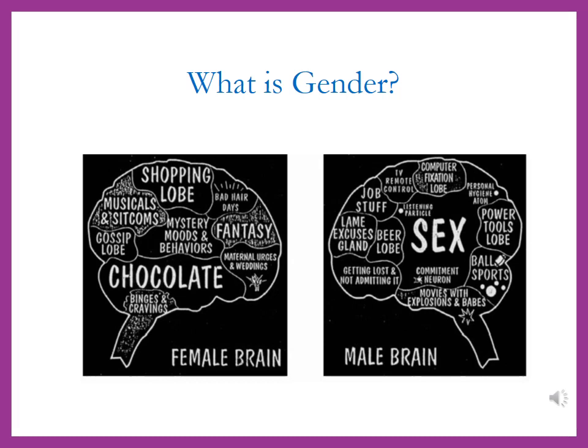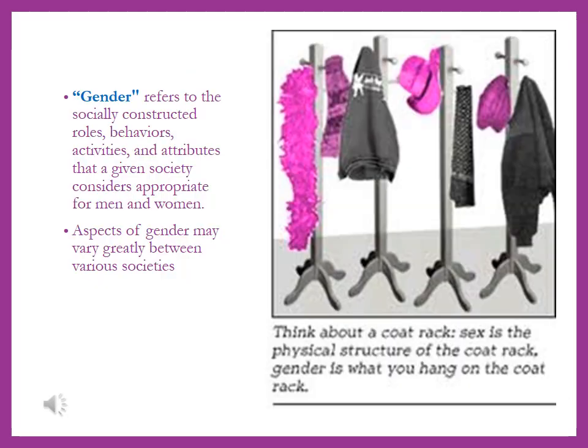The next term to consider is gender. Gender actually refers to the socially constructed roles, behaviors, activities, and attributes that a given society considers appropriate for men and women. Notice I say that the society considers appropriate for men and women, so that might mean that it's not something that you're innately born with. Therefore, if you look at gender categories, they're masculine and feminine, whereas sex categories are male and female.